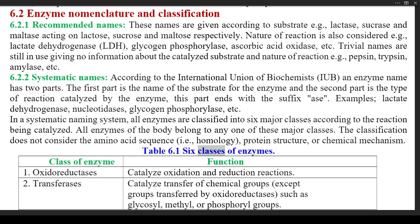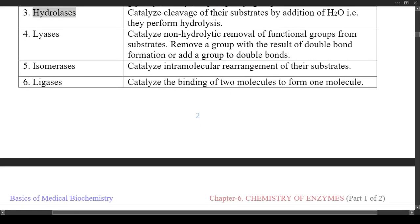Table 6.1 — Six Classes of Enzymes: (1) Oxidoreductases — catalyze oxidation and reduction reactions. (2) Transferases — catalyze transfer of chemical groups, except those transferred by oxidoreductases, such as glycosyl, methyl, or phosphoryl groups. (3) Hydrolases — catalyze cleavage of their substrates by addition of H₂O, i.e., they perform hydrolysis. (4) Lyases — catalyze non-hydrolytic removal of functional groups from substrates, removing a group with the result of double bond formation, or adding a group to double bonds.